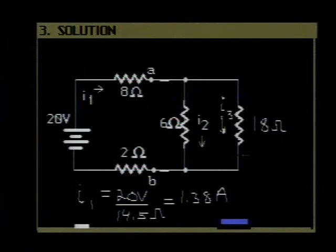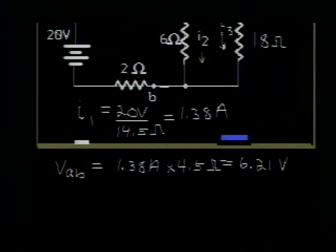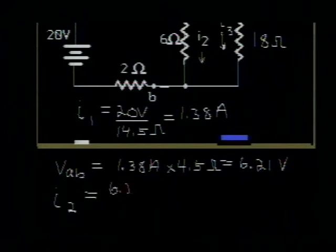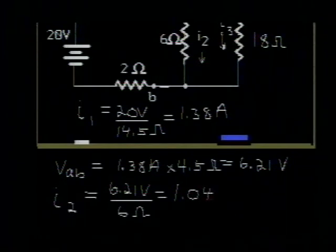Let's find I2. I2 would simply be equal to the voltage across the resistance, 6 ohms, which is 6.21 volts, divided by the 6 ohm resistance. This comes out to be the three significant figures, 1.04 amperes. That's the value for I2.